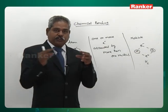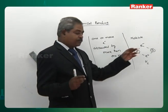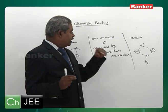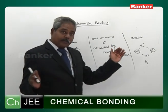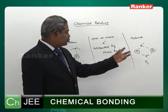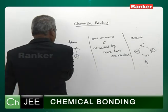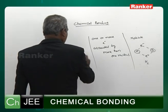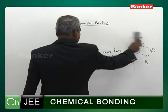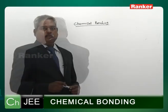How do two positive charges come close? This is positive, this is positive — they don't come close on their own. A negative charge will bring them together. So one or more electrons attracted by more than one nucleus is bonding.